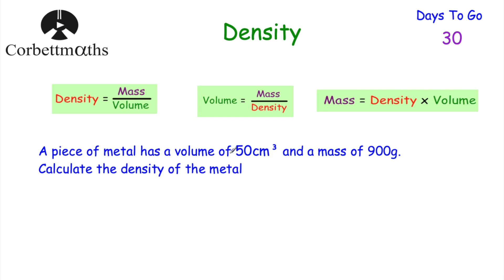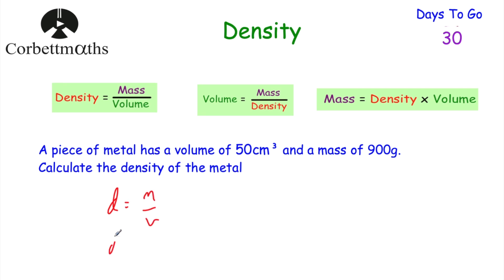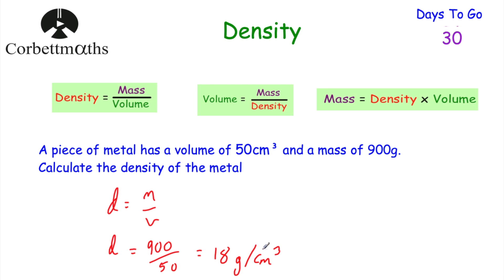Let's look at a question. A piece of metal has a volume of 50 centimetres cubed and a mass of 900 grams. Calculate the density of the metal. We want to find how heavy 1 centimetre cubed would be, so we take the 900 grams and divide by 50. Using the formula: density equals mass divided by volume, that's 900 divided by 50, which equals 18. So the density of the metal is 18 grams per centimetre cubed — 18 grams for every centimetre cubed.